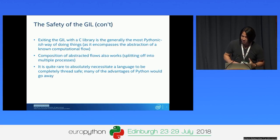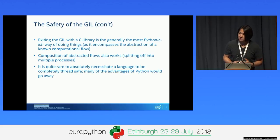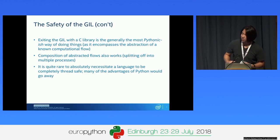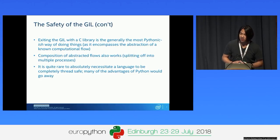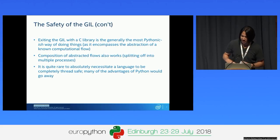Exiting the GIL with a C library is the most Pythonic-ish way of doing things. If you understand the abstraction of your computational flow, you can write a library that does this type of work, wrap it in Python, and that's essentially the most Pythonic way of operating. This composition of abstracted flows by splitting off into multiple processes can also be a cleaner way of escaping the GIL.